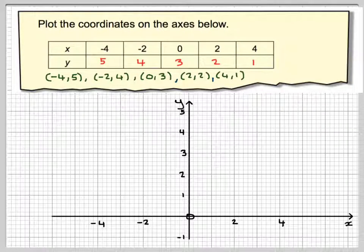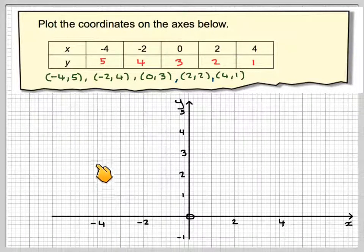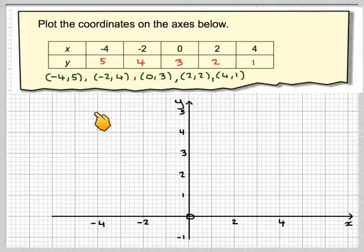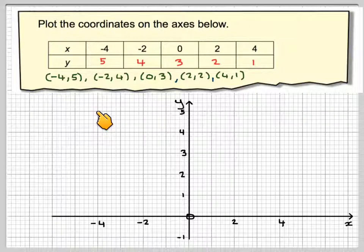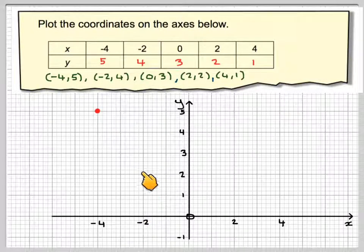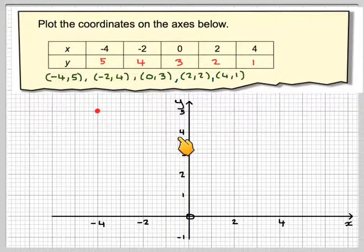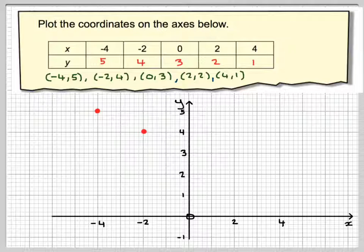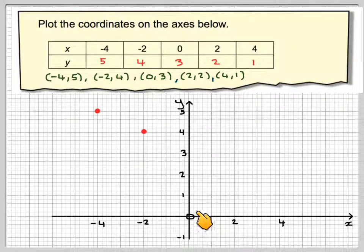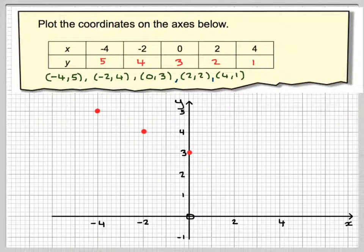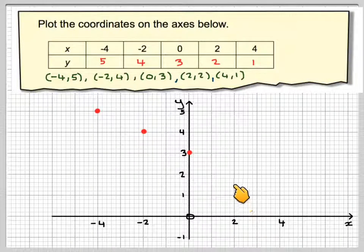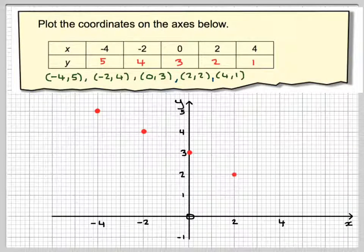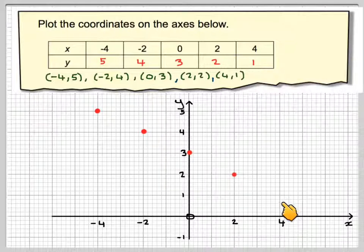What I need to do is go along here. Minus 4, and then up 5, which is that point there. Then I need to do minus 2, 4, which is that one there. Remember, it's the x-coordinate first. Then we need to do 0, 3, and then 2, 2, and 4, 1.